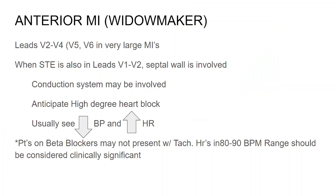What people commonly call the Widowmaker refers to the vessel known as the left anterior descending, which often presents with what a lot of people like to call the anterior MI. We're going to go over why that's a little bit of a misnomer in a minute, but before we do let's talk about things you will see and the criteria.